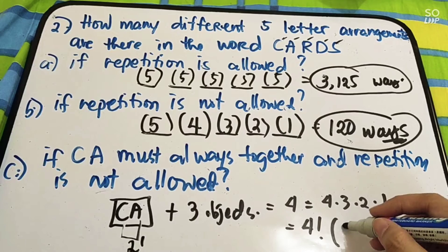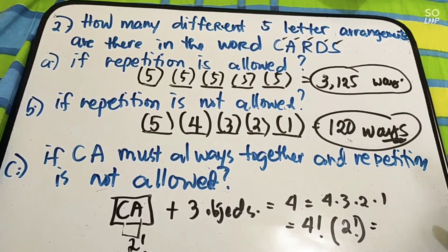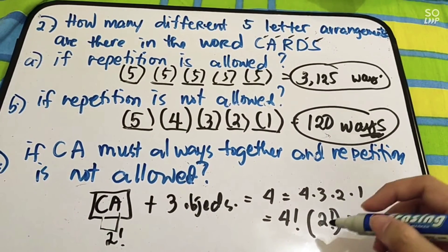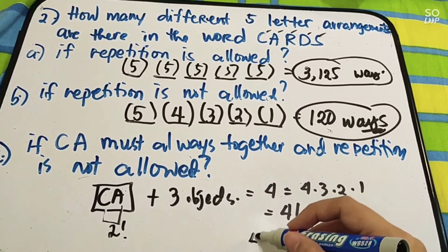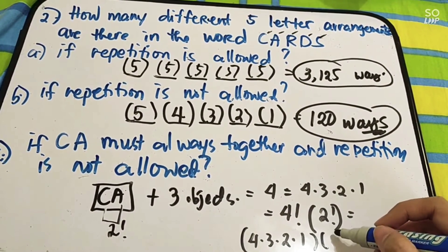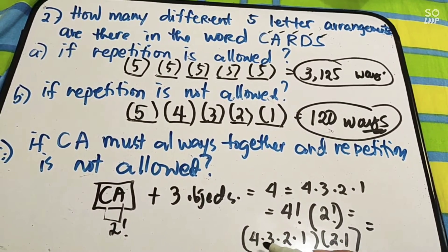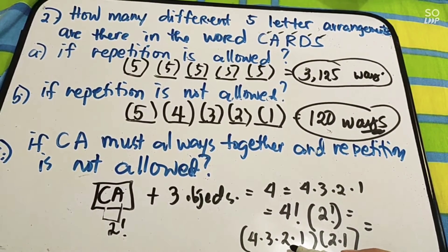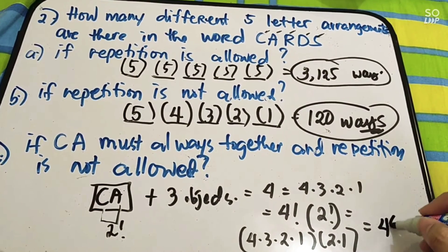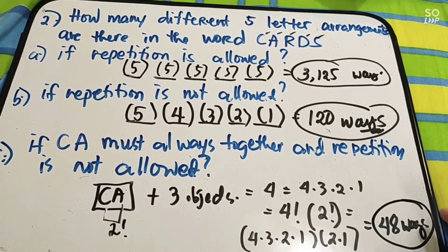So, four factorial, imultiply pa natin si C and A — pwede pang magkapalit yan, so the permutation of C and A is two factorial. We have four factorial times two factorial. That is four times three times two times one, multiplied by two times one: four times three is twelve, times two is twenty-four, times two gives forty-eight. The answer is forty-eight ways.